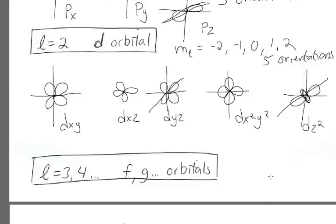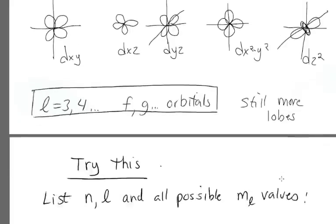And l can be greater than two. It can be three, four, and beyond. And from that point on, we label them with letters of the alphabet starting at f. So it's f, g, h, et cetera. And these will have still more lobes. So as l goes up, you have more and more lobes. You have no lobes for l equals zero, two lobes for l equals one, and more as you go up.